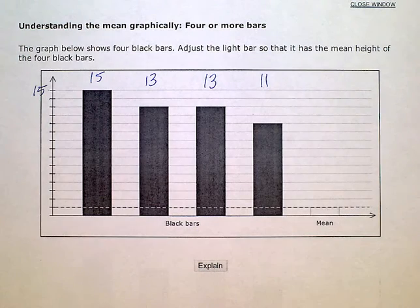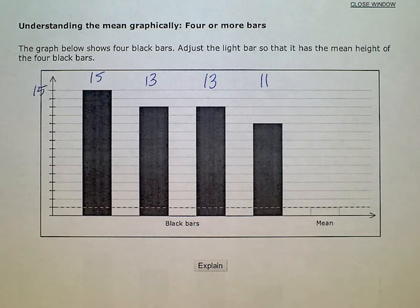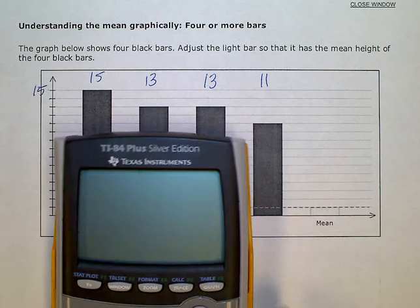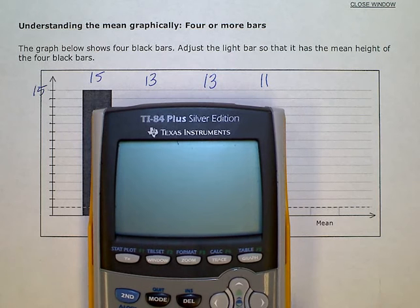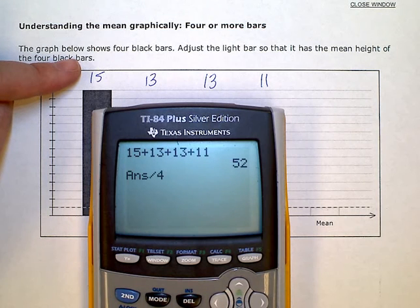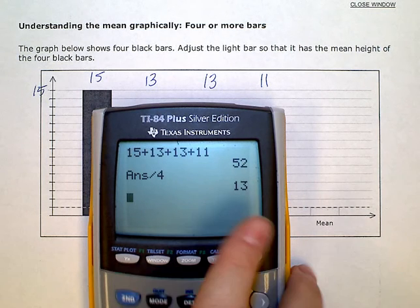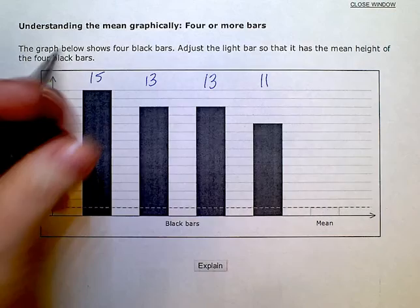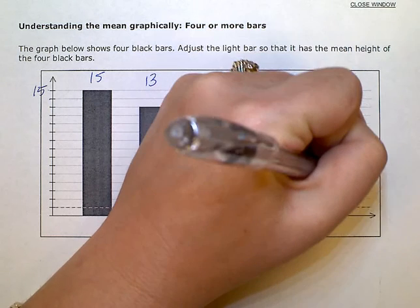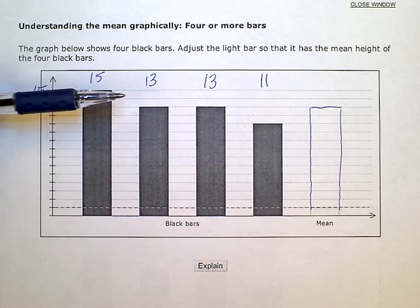So I just need to find the average of those four numbers, and then I'm going to make this bar that high. We find the average by adding them up and dividing by how many there are. So: 15 plus 13 plus 13 plus 11 gives me 52. Because there are four numbers, I divide by four. My mean, or average, is 13 — so I would drag this bar up to the line 13, level with those two bars.